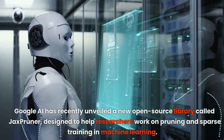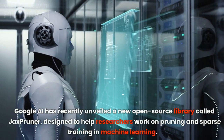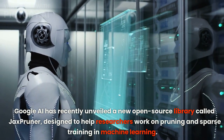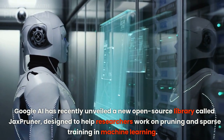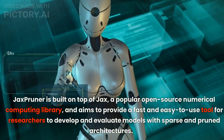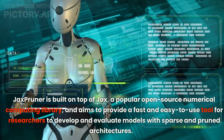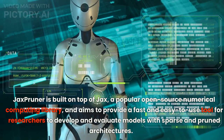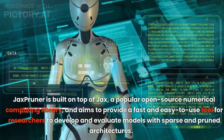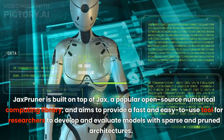Google AI has recently unveiled a new open-source library called Jax Pruner, designed to help researchers work on pruning and sparse training in machine learning. Jax Pruner is built on top of Jax, a popular open-source numerical computing library, and aims to provide a fast and easy-to-use tool for researchers to develop and evaluate models with sparse and pruned architectures.